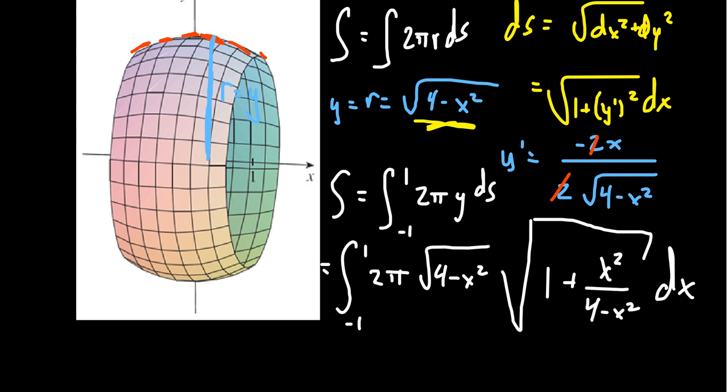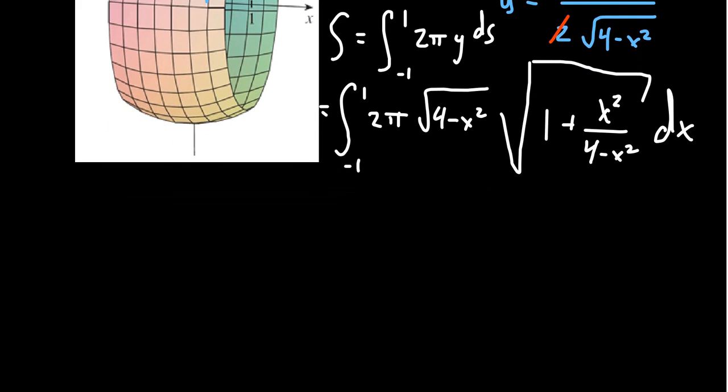Now, when you're looking at this thing, you might be like, but Professor Mesodon, you said that surface areas are a lot easier than arc lengths. This looks intense. Well, maybe at first, but let's do a little bit of algebraic simplification. It turns out that's going to be our saving grace right here. This one turns out to be really, really nice. I promise you that.